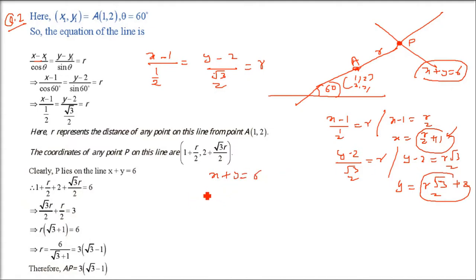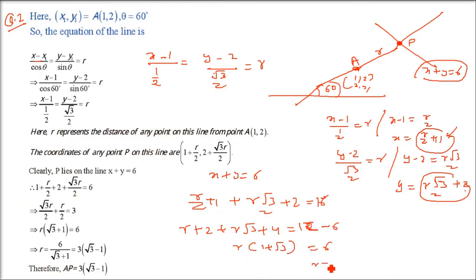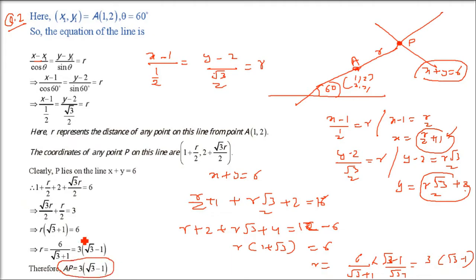Since point P lies on x plus y equals 6, substitute x and y: R/2 + 1 + R√3/2 + 2 = 6. Multiply both sides by 2: R + 2 + R√3 + 4 = 12. So R(1 + √3) = 6, giving R = 6/(√3 + 1). Rationalizing by multiplying by (√3 - 1)/(√3 - 1), we get AP = R = 3(√3 - 1).